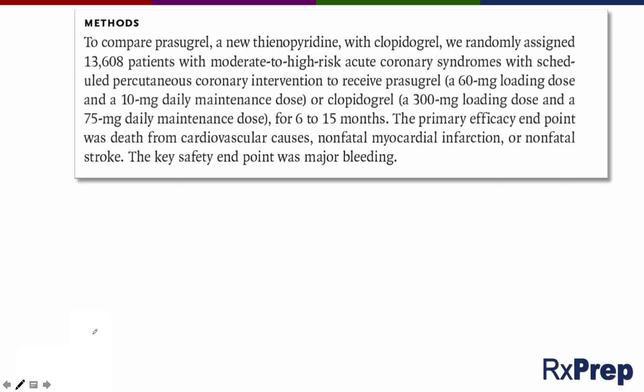First, let's read the methods section. To compare prazegrel, a new thienopyridine, with clopidogrel, we randomly assigned 13,608 patients with moderate to high-risk acute coronary syndromes with scheduled percutaneous coronary intervention to receive prazegrel — a 60 mg loading dose and a 10 mg daily maintenance dose — or clopidogrel — a 300 mg loading dose and a 75 mg daily maintenance dose — for 6 to 15 months. The primary efficacy endpoint was death from cardiovascular causes, non-fatal myocardial infarction, or non-fatal stroke. The key safety endpoint was major bleeding. This is a study involving patients with ACS who will undergo PCI, receiving one of two antiplatelet medications to reduce the risk of thrombotic complications.